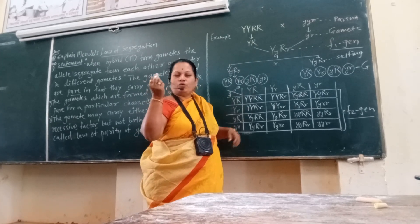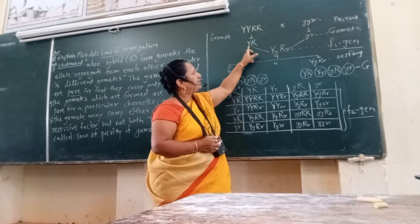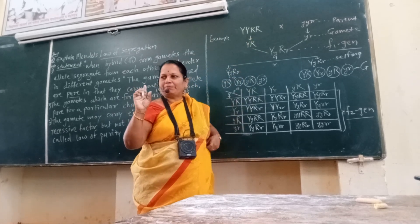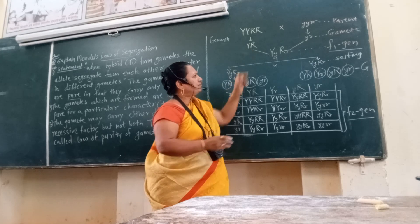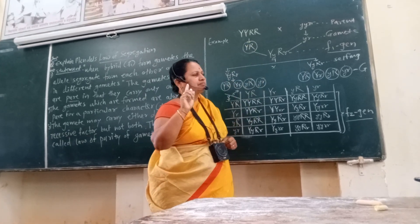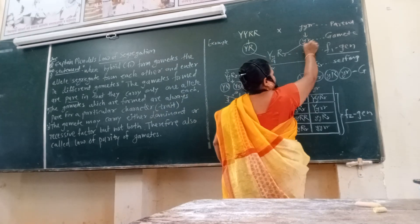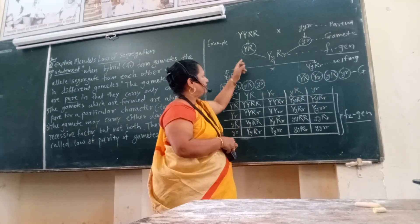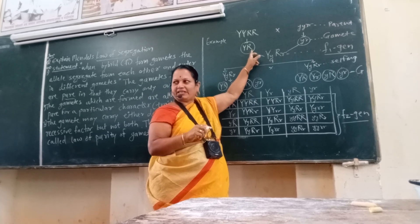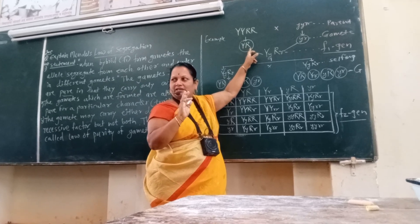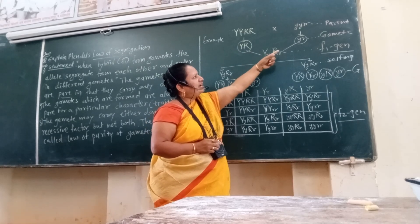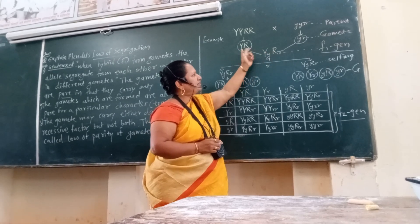Only one allele for color — capital Y — is present, and for shape — capital R — only one allele is present. The gametes consist of only one allele for each trait: for yellow color it is capital Y, and for round shape it is capital R. Not both capital R and small r, but only one — capital R. And similarly small y and small r are separate gametes.